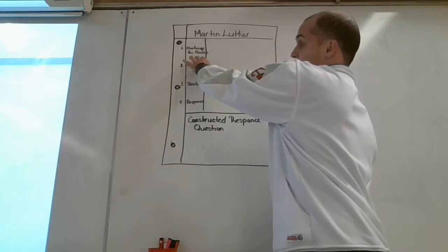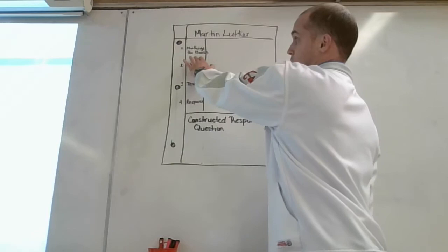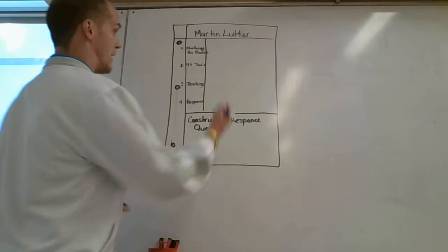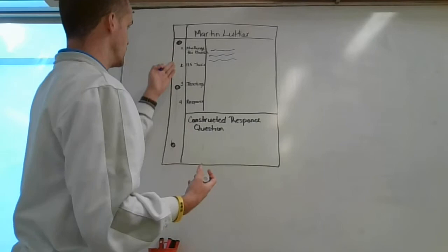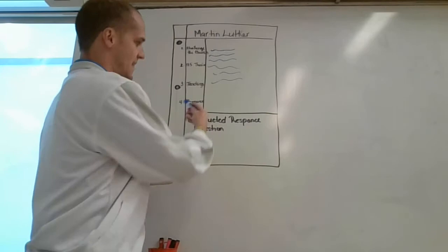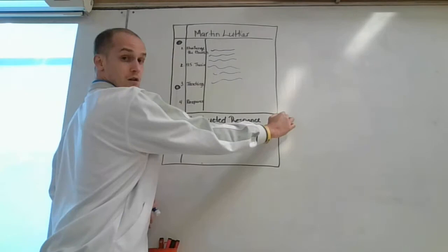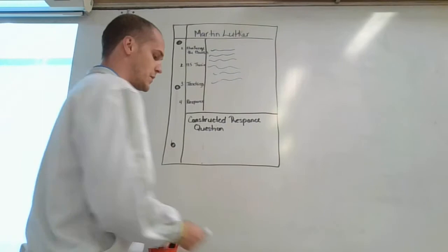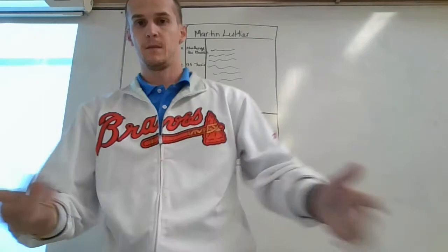We're going to go over four things. Number one will be 'challenge the church.' I'll tell you when we're going forward, so right now just write number one. As we go through the PowerPoint, you'll take your notes on the other side of that line. Then I'll tell you when we're moving to number two, which is the 95 Theses, then number three, and number four which is the response. At the end, you'll draw a line across and answer the constructive response question, which will be posted in complete sentences within the PowerPoint.